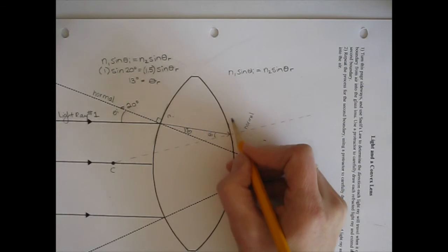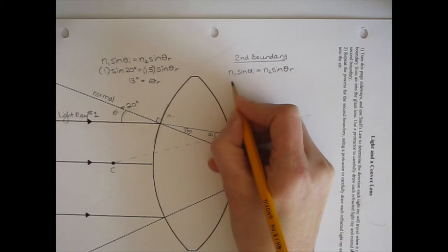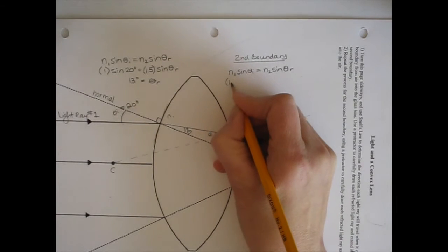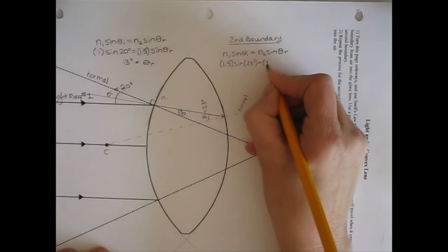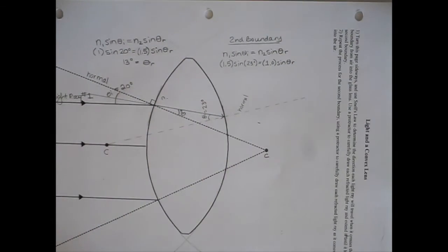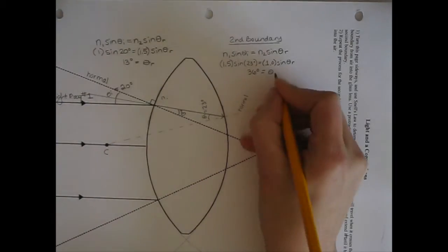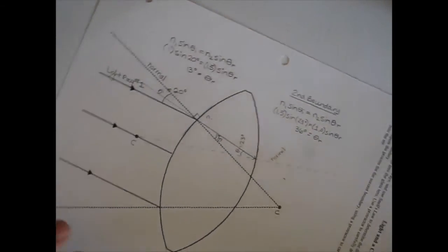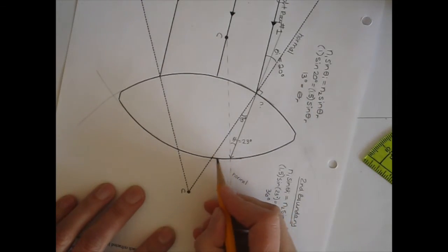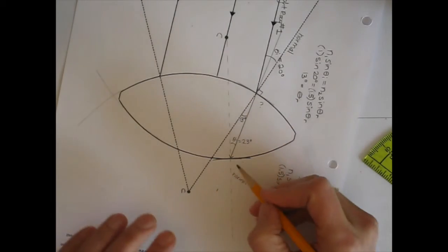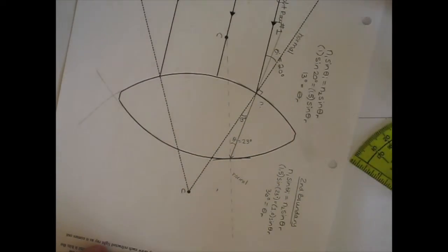Applying Snell's Law to this second boundary for light ray number one: N1 is now the inside material of the lens — 1.5 times sine of 23 degrees — equals the outside material, air, so 1.0 times the sine of the refracted angle. Calculating that, I get 35.9 degrees, so approximately 36 degrees is the angle of refraction. Turning the paper so I have the normal, incident angle, and boundary aligned, I measure 36 degrees for the refracted ray and draw its pathway.